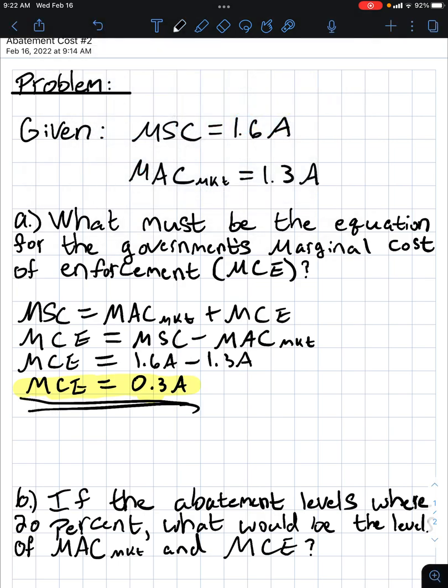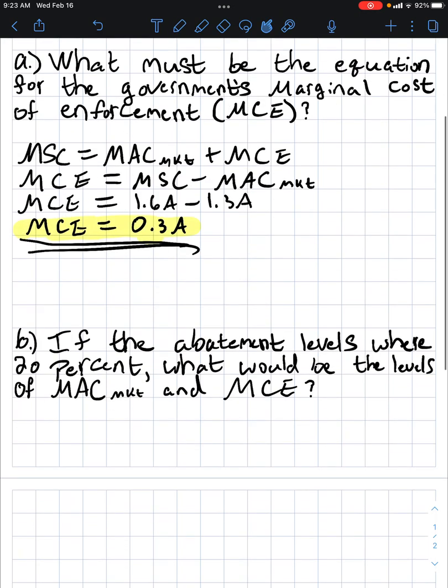And that is the solution for Part A. What does this mean? Well, the marginal cost of enforcement of 0.3A means that every percent of land abated will cost $300,000 to enforce.